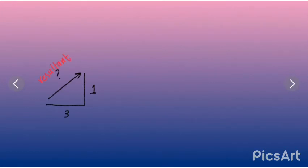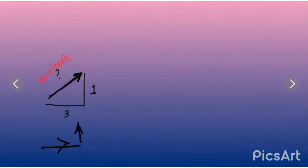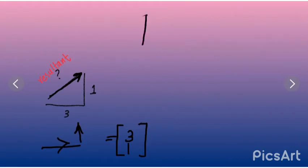Now we have to find this part, and this is called a resultant. So for that, we know that we have two answers. One which is going in this direction — it is going to the right, so it is 3, and then it is going up, which is 1. If you're taking the opposite way, it is going down, which means minus 1, and it is going to the left side, which is the opposite direction, so it is minus 3.